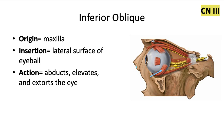Next, we have the inferior oblique muscle. It originates on the maxilla and inserts into the same lateral surface of the eyeball. It does the opposite — it abducts, elevates, and extorts the eye, which means it laterally rotates the eye.